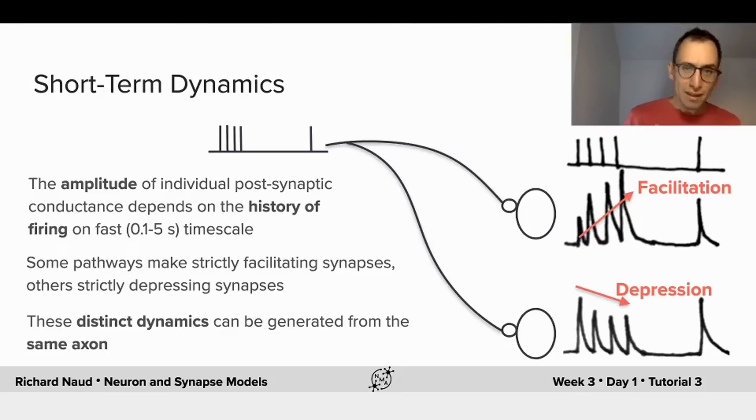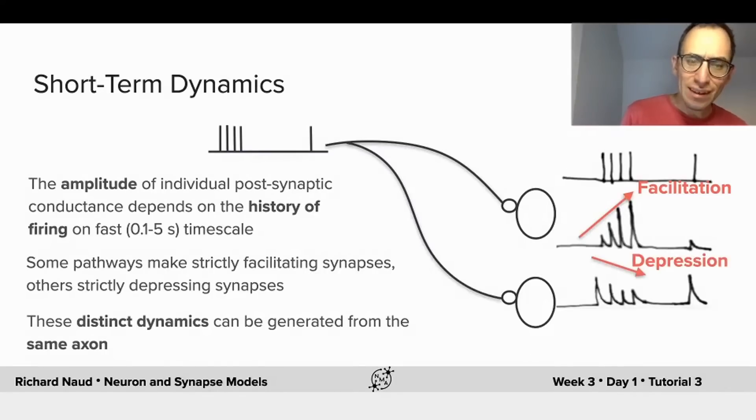Well, there are many reasons why this is not the case, but the most important one is the presence of short-term dynamics at the synapses. So short-term dynamics means that as a function of the firing history, the amplitude of the postsynaptic currents or postsynaptic potential is changing. But it's changing in a transient manner, meaning that if you wait a long time, the amplitude will be the same as the one before.